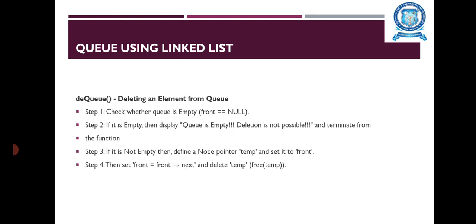The next operation is dequeue, which means deleting an element from the queue. First, check whether the queue is empty. If it is empty, display 'Queue is empty.' If it is not empty, define a node pointer temp and set it to front. Then set front equal to front->next and delete the temporary node, returning the free space to the free pool.